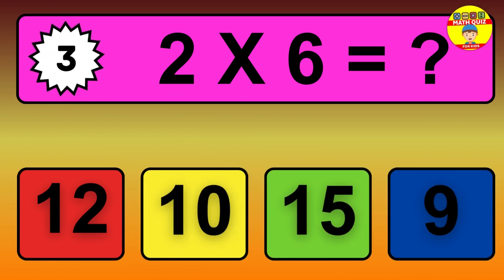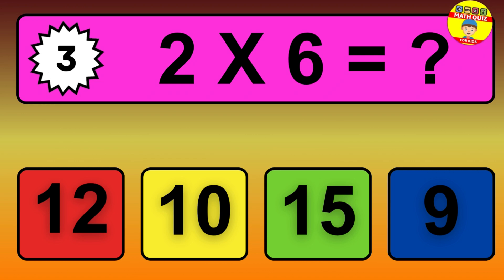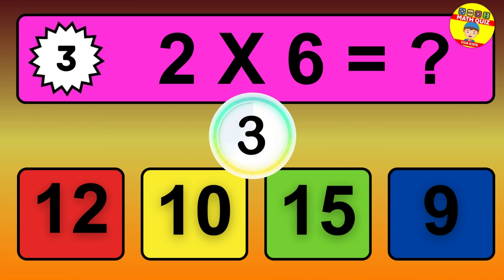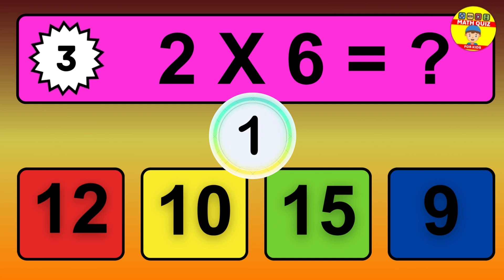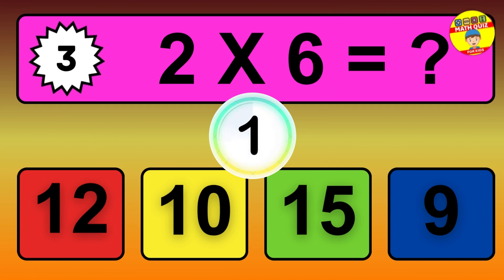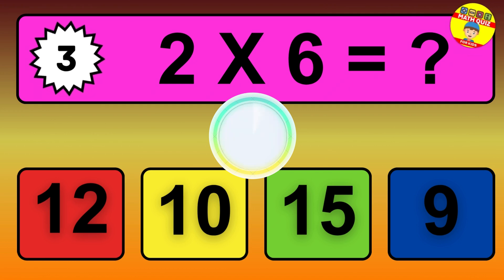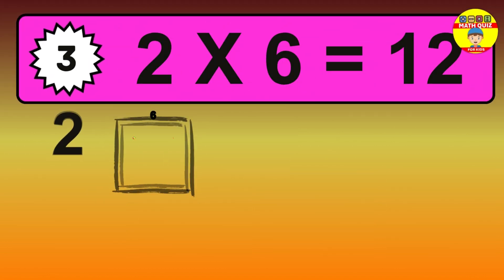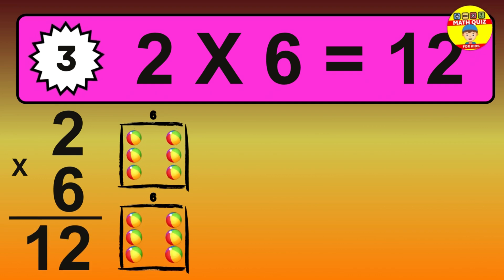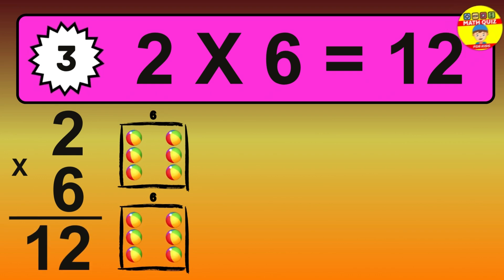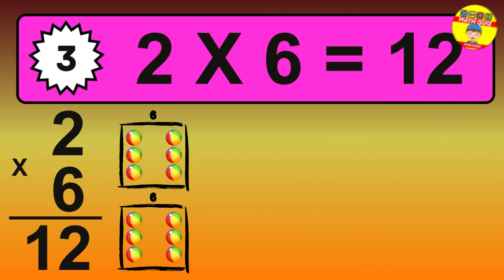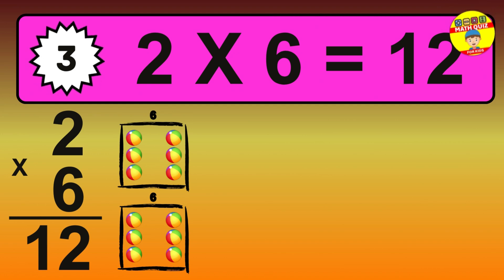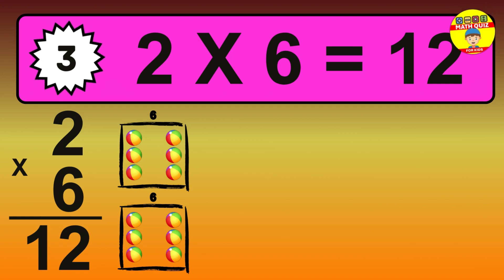Question 3. 2 times 6 equals what? The answer is 2 times 6 is 12. To calculate, we have 2 groups with 6 balls each. So how many balls do we have? 12 balls.